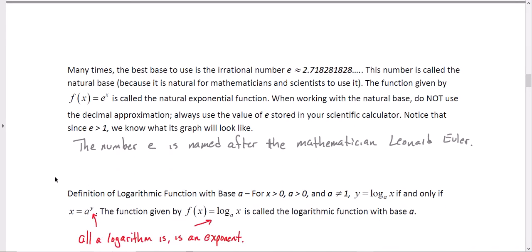Many times, scientists and mathematicians will use the number e. e is approximately 2.718. When you get into calculus, you're going to know more about e and learn where it came from and why it's so amazing for scientists and engineers. But, for now, we're just going to call it e, this approximation.